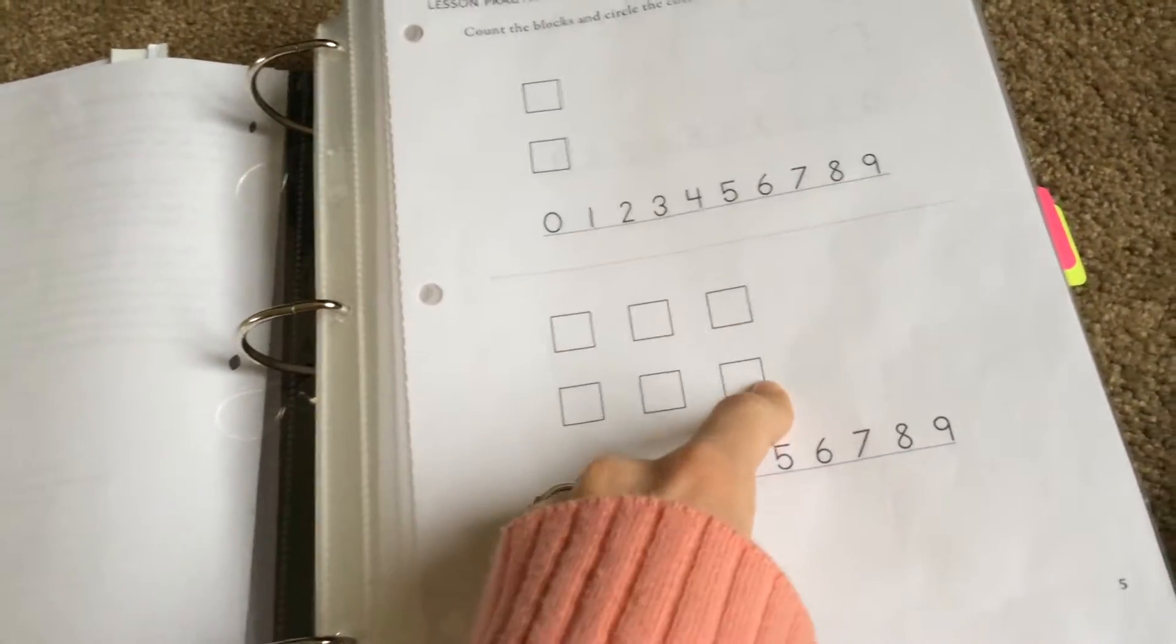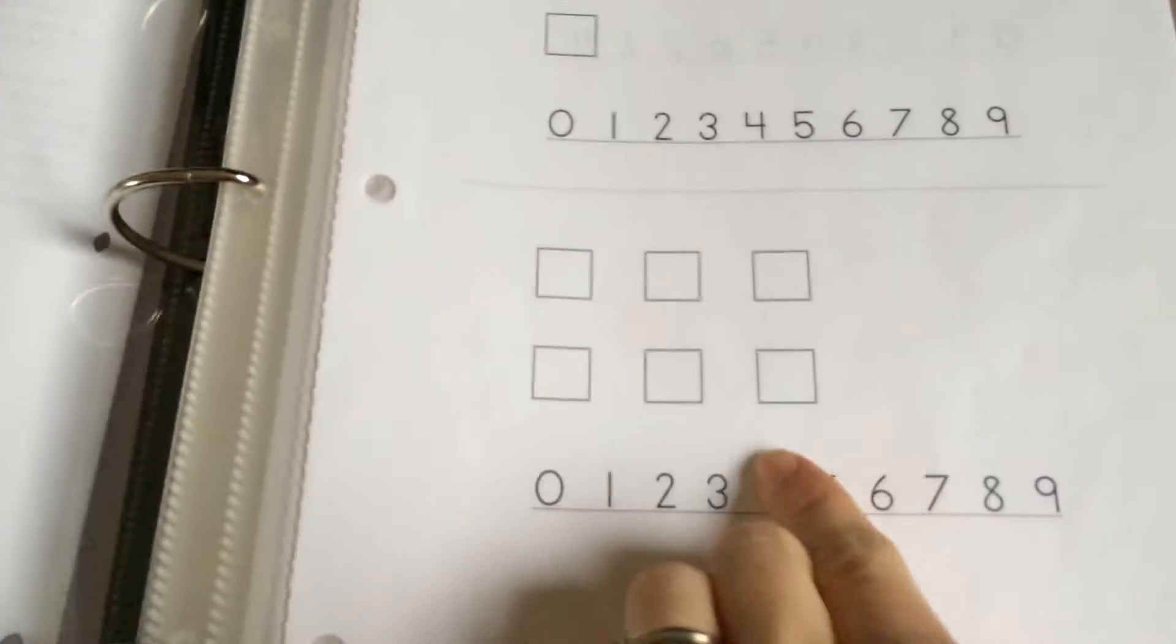So first they start using blocks. They put the blocks on here. That's kind of what the blocks look like, if you can see those. And there are 100 blocks, too. I don't have those up here. And then they circle it, so they start with just circling it later on.